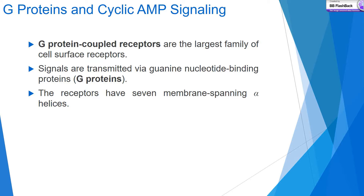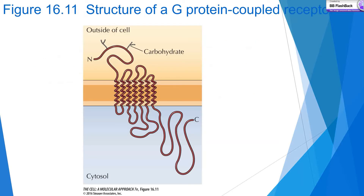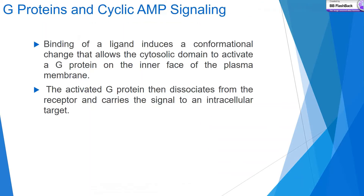G-protein coupled receptors are the largest family of cell surface receptors. Signals are transmitted via guanine nucleotide binding proteins — G-proteins. Receptors have seven membrane-spanning alpha helices. The outside of the cell contains the N-terminal, and the inside contains the C-terminal domain. Binding of a ligand induces a conformational change that allows the cytosolic domain to activate a G-protein on the inner face of the plasma membrane.